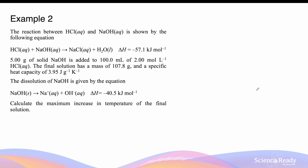Let's look at Example 2. The reaction between hydrochloric acid and aqueous sodium hydroxide is given by the same equation and enthalpy change as in Example 1: minus 57.1 kJ per mole. In this experiment, 5 grams of solid sodium hydroxide is added to 100 milliliters of 2 moles per liter hydrochloric acid. The final solution has a mass of 107.8 grams and a specific heat capacity of 3.95 joules per gram per kelvin. The dissolution of sodium hydroxide — NaOH(s) → Na⁺(aq) + OH⁻(aq) — has an enthalpy change of minus 40.5 kJ per mole, meaning every mole of sodium hydroxide that dissolves releases 40.5 kJ of energy.